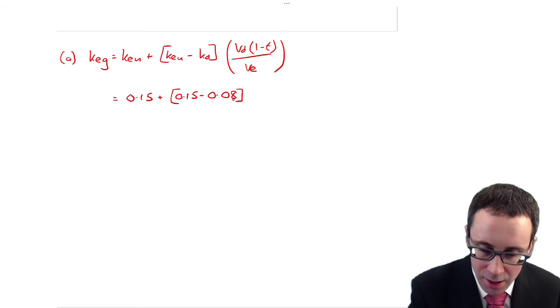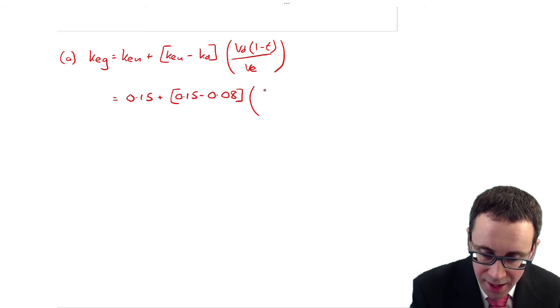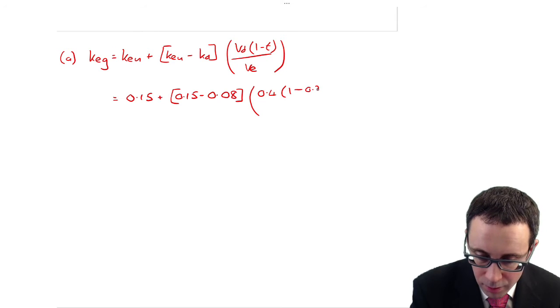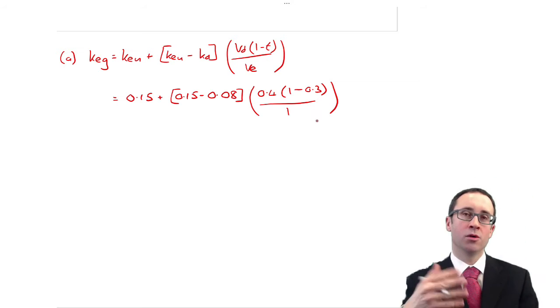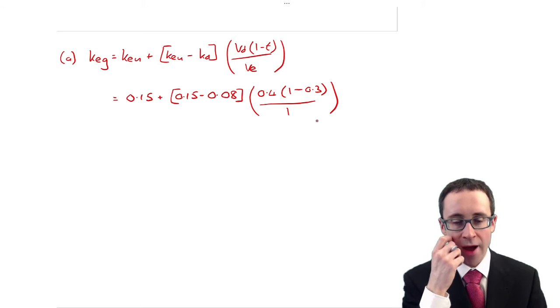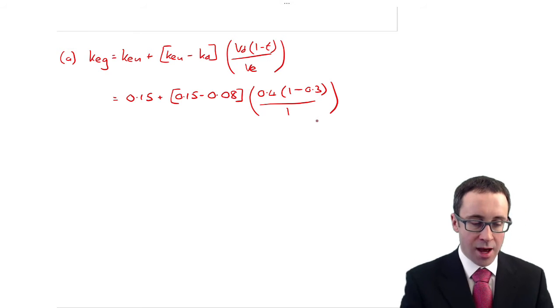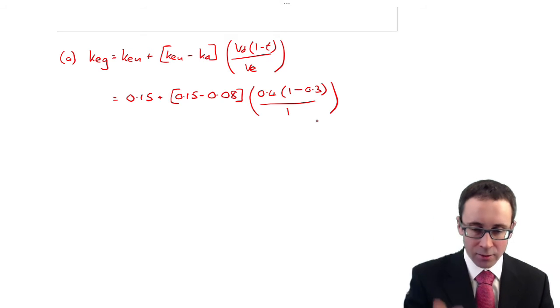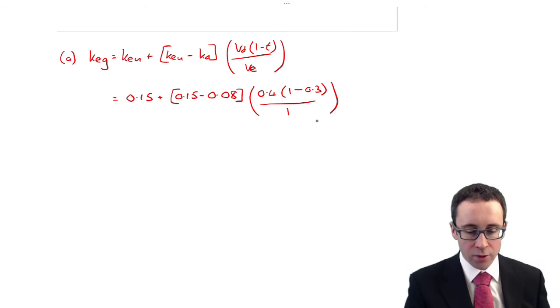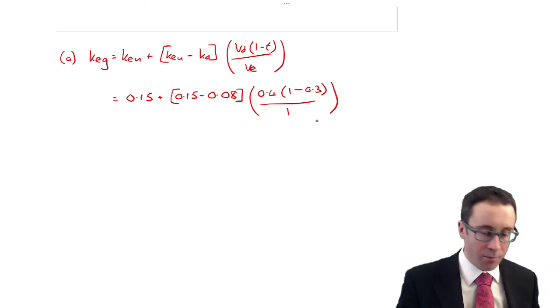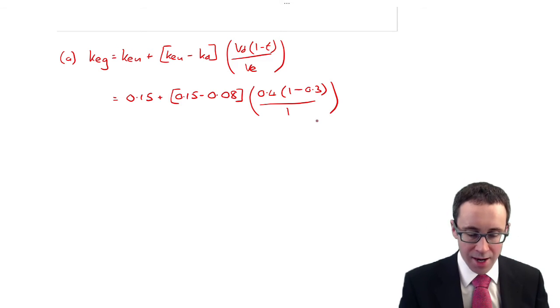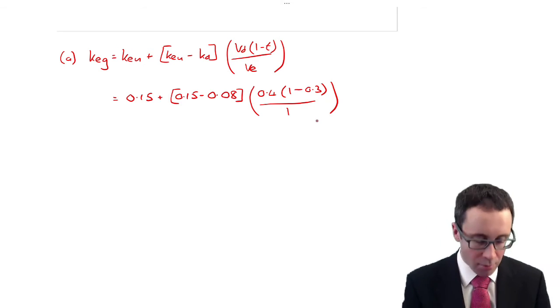So it's KEU plus the difference between KEU and KD, multiplying that by VD, the market value of debt, multiply by one less the tax charge over the value of equity. Use the formula sheet in the exam. Don't try and remember it. You'll only make a subtle mistake. So once you've got that, it's just a case of putting the numbers in. What have we got? Cost of equity was 15%, so that's 0.15 plus my cost of equity was 0.15 and the cost of debt was 0.08.